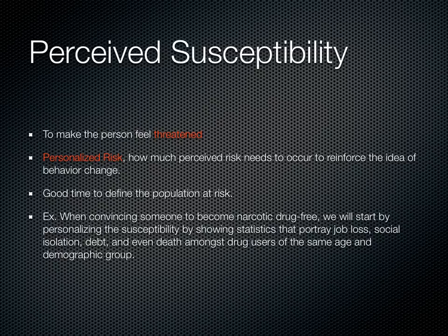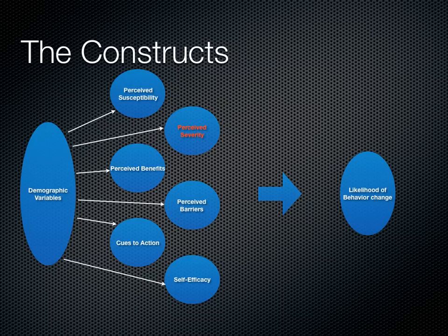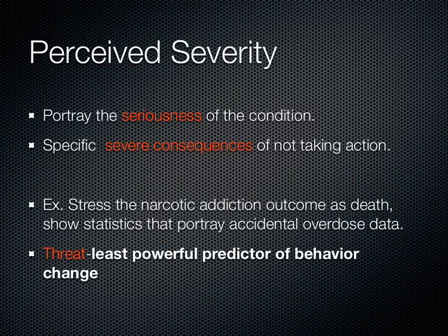An example: when convincing someone to become narcotic drug-free, we start by personalizing the susceptibility by showing statistics that portray job loss, social isolation, or debt from using credit cards to fund the drug habit — and even death, the most severe outcome among drug users. We make sure to use statistics from the same age and demographic group to keep the program personalized.